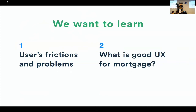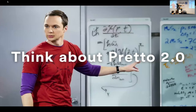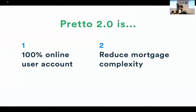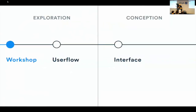After this evaluation we realized several improvements on our app. But this evaluation also helped us prepare and pose hypotheses for version two. Version two of Preto is 100% online with a user account. The key is: user finds the best way to make a mortgage project 100% online on Preto and reduce mortgage complexity. We want to give information to help users understand why mortgage is complex — with information it's possible to reduce this complexity and create trust.